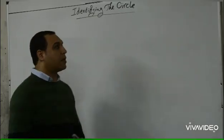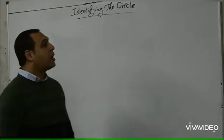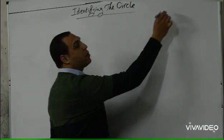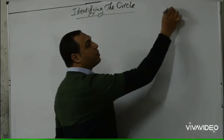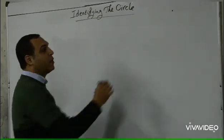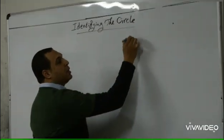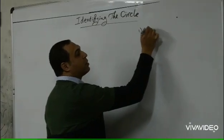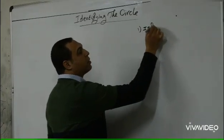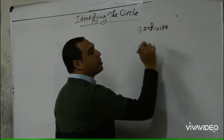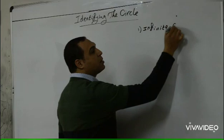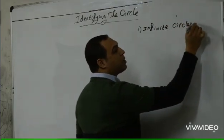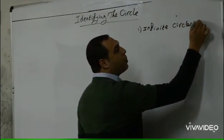How many circles can be drawn passing through one point? The answer is infinite — you have infinite circles that can be drawn passing through one point.